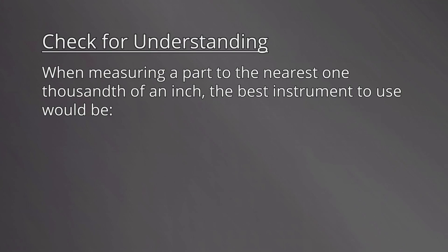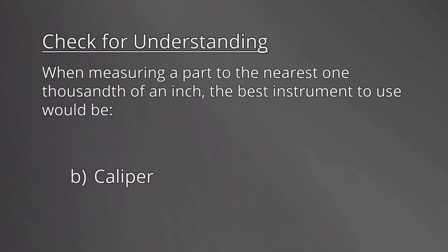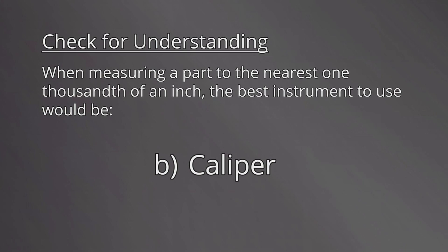When measuring the outside of a part to the nearest one thousandth of an inch, the best instrument to use would be: A) a steel rule, B) a caliper, or C) a depth micrometer. The correct answer is B, caliper. Calipers measure to one one-thousandth of an inch.